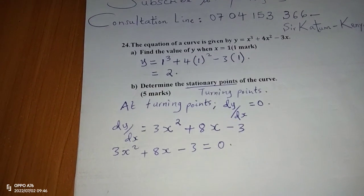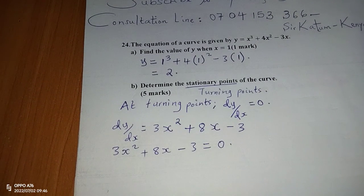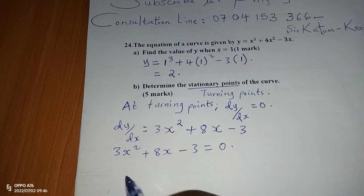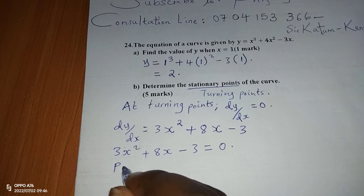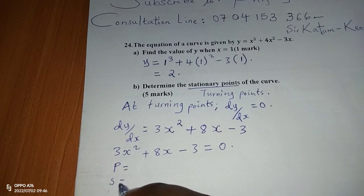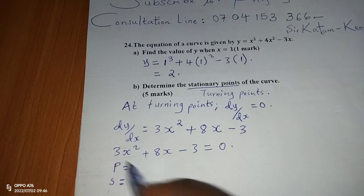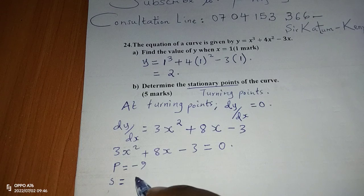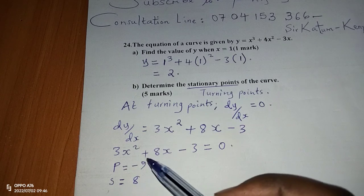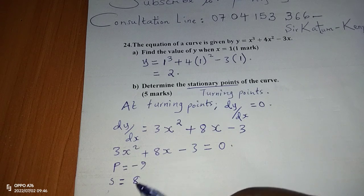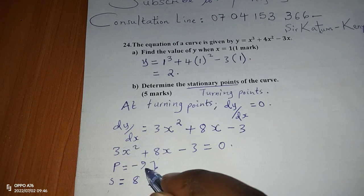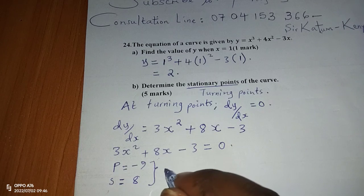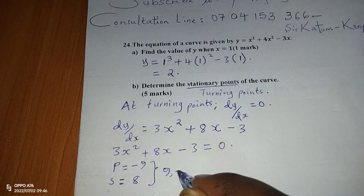To solve this quadratic equation, we use the factorization method — the product-sum method. We need a product of 3 times negative 3 equals negative 9, and a sum equal to 8. The two factors are 9 and negative 1, since 9 times negative 1 equals negative 9 and 9 plus negative 1 equals 8.